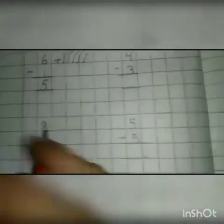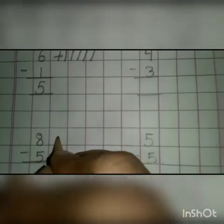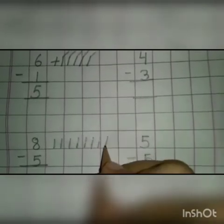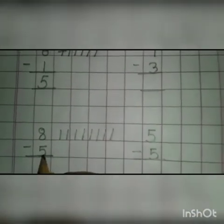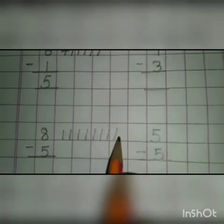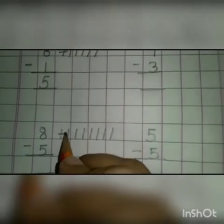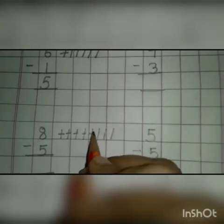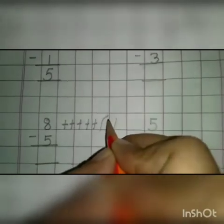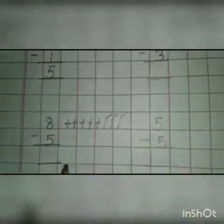Let's go to the next sum. And this is number 8. Now we will draw 8 lines: 1, 2, 3, 4, 5, 6, 7, 8. And this is number 5. Now you take away 5 lines from these lines: 1, 2, 3, 4, 5. How many lines are left? Let's count: 1, 2, 3. Now we will write 3 here.